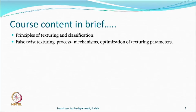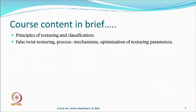One of the interesting technologies, which is quite popular, is called the false twist process. What it means is that you actually twist the yarn, but finally there is no twist — and therefore it is called false twist. We will talk about mechanisms related to this texturing process, properties, structure-property correlation, process parameters, and so on.